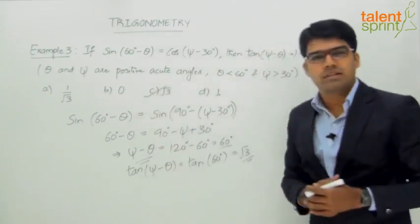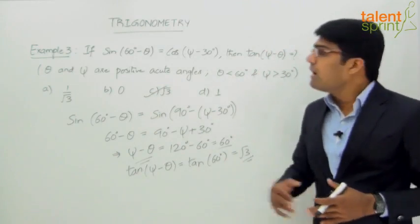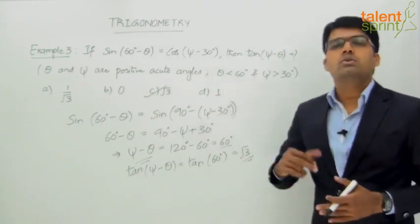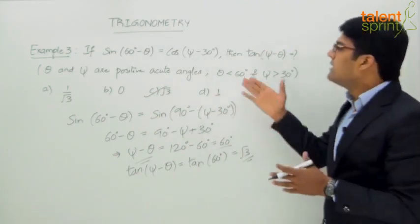...has to be option C: √3. So again, a very simple one. It's all about converting one trigonometric ratio into the other so that we can find the required answer.